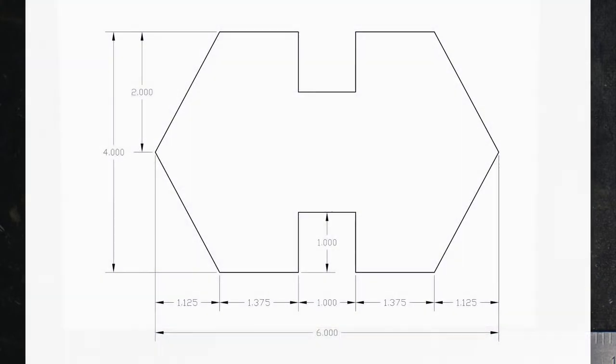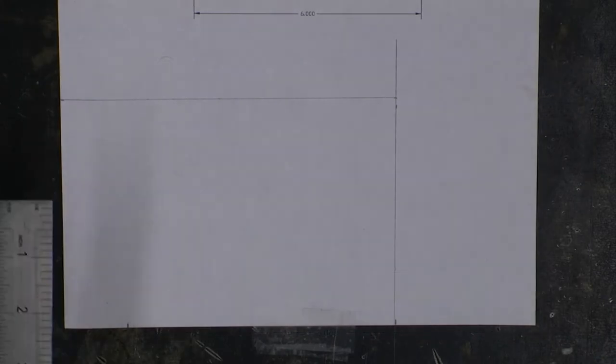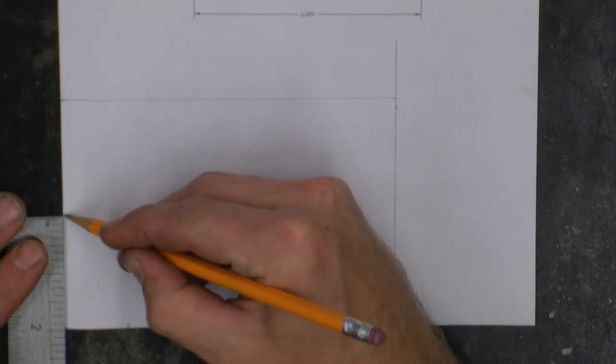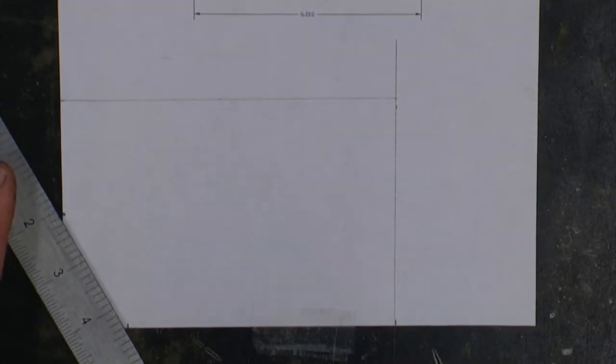Looking back at our drawing, we can see that our second reference point for this line is two inches down from the top. Now given that the overall height is four inches, I could also measure two inches from the bottom of the drawing going upward. And then I can connect these lines together.